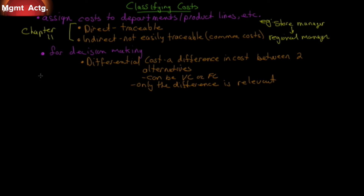For example, you can buy a cheap printer where the ink is really expensive, or an expensive printer where the ink is really cheap. You can get a cheap printer and pay a lot to operate it, or pay a lot for a printer and pay very little to operate it. Of course, the more you use your printer, the more you'll lean towards the expensive printer because the cost per page is lower.